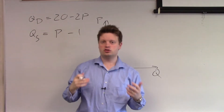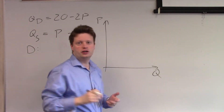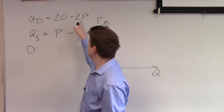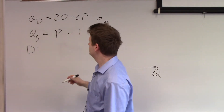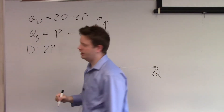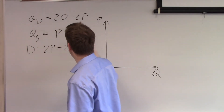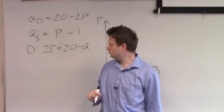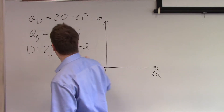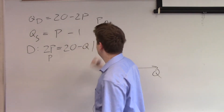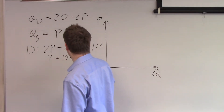Let's start with demand. We first want to put 2P on the left and Q on the right. So we get 2P equals 20 minus Q. But we don't want 2P, we want P. So by dividing by 2, we get P is equal to 10 minus Q over 2.